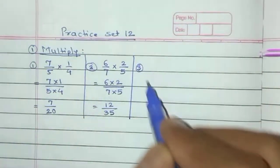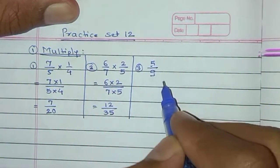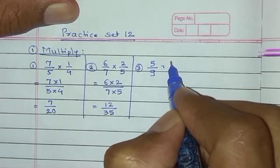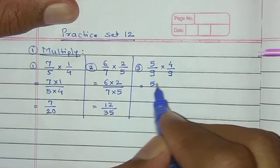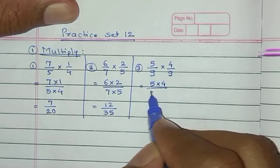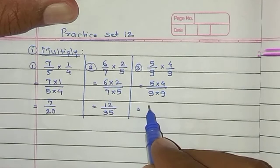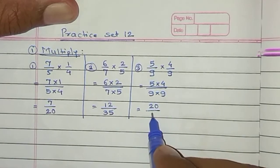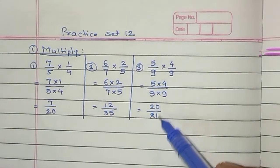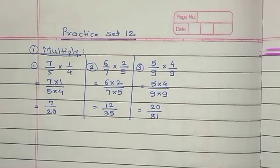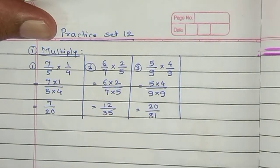Example number 3 is 5/9 multiplied by 4/9. Is equal to numerator multiplied by numerator upon denominator multiplied by denominator. Is equal to 5×4=20 upon 9×9=81. Can we reduce this fraction? No. So this is the final answer: 20/81.